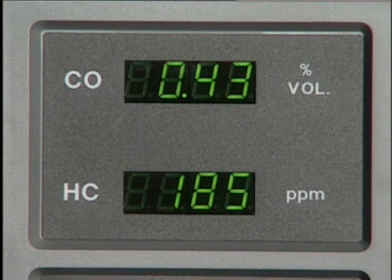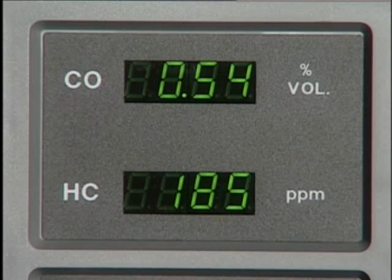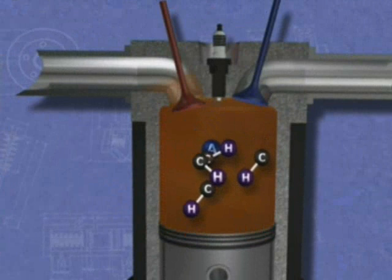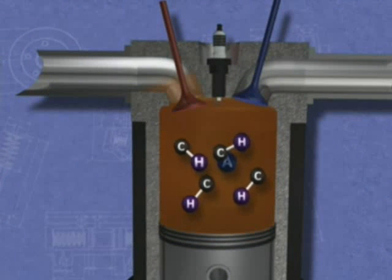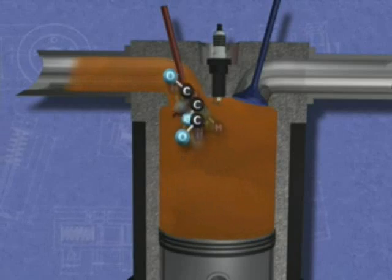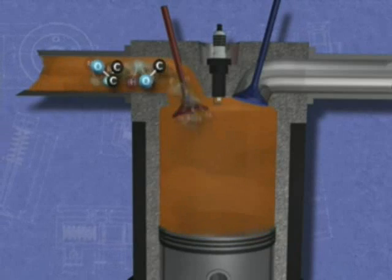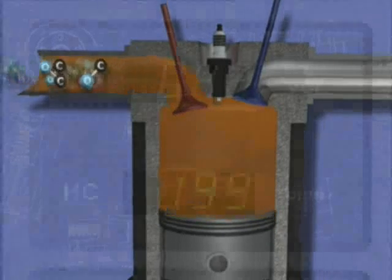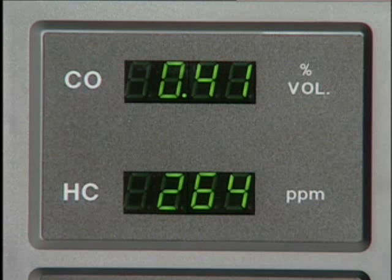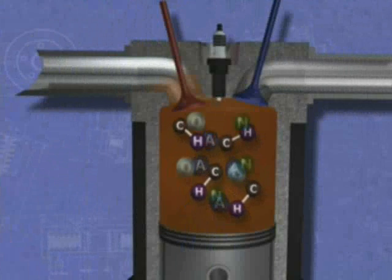Carbon monoxide, or CO, is another toxic substance that must be controlled. CO is produced when there is insufficient oxygen available to completely burn the fuel. Under this condition, each carbon atom is joined by only one oxygen atom.